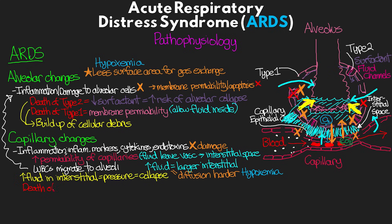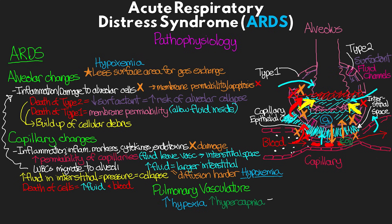Having additional fluid in the interstitial space also puts pressure on the alveolus itself, contributing to collapse. This added fluid and pressure is responsible for the heavier lung we see in ARDS as well as decreased compliance, since we're working against expansion of the alveoli. Furthermore, damage and death of capillary endothelial cells can allow additional fluid or potentially blood into the interstitial space and alveoli. On top of alveolar and capillary changes, we also see pulmonary vascular changes due to increasing hypoxia and hypercapnia, leading to vasoconstriction and some degree of pulmonary hypertension, which can impact cardiac output.